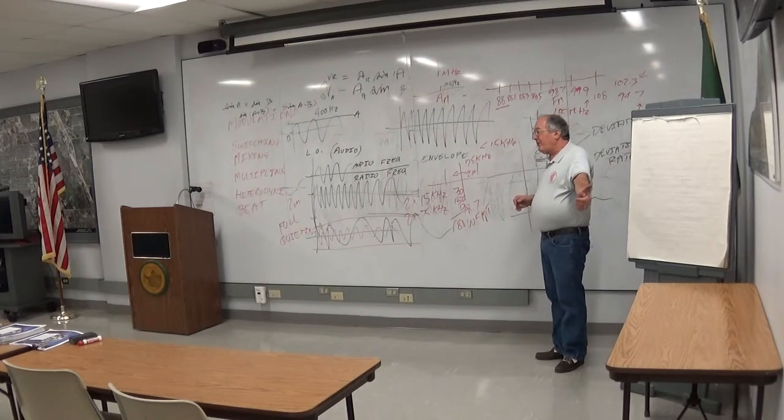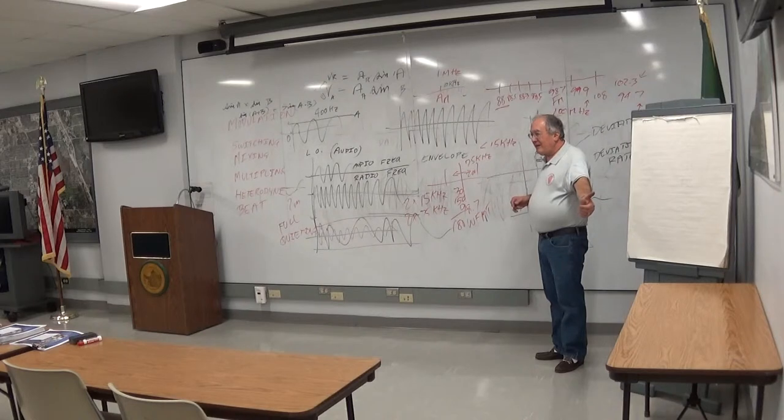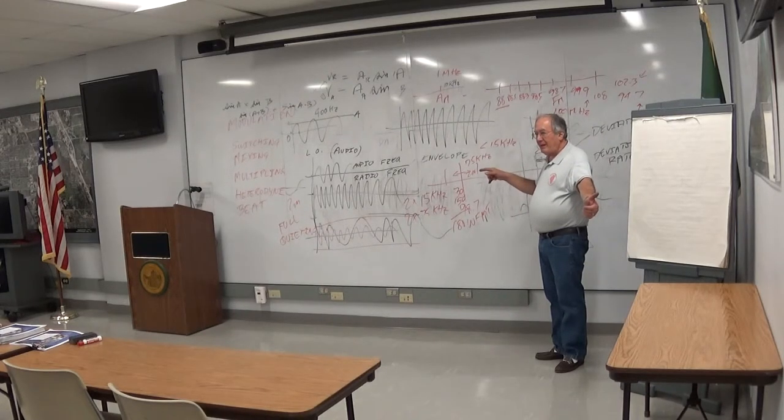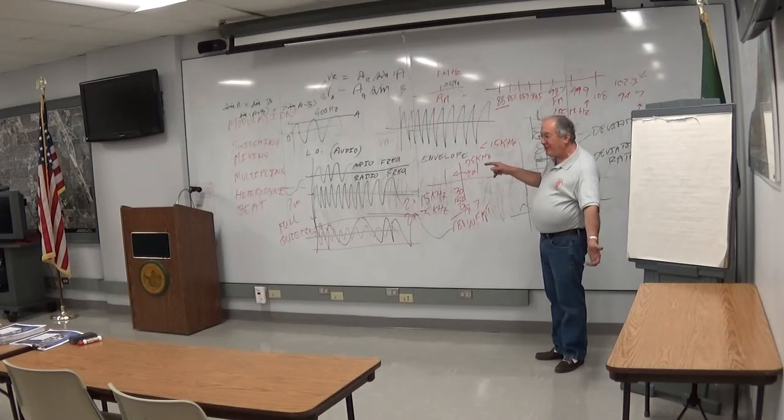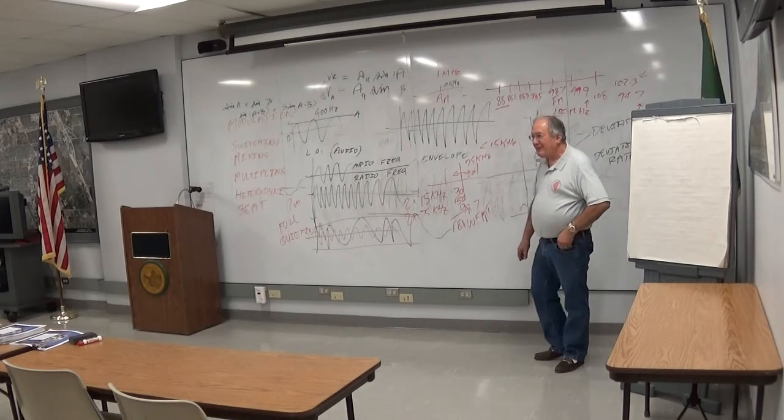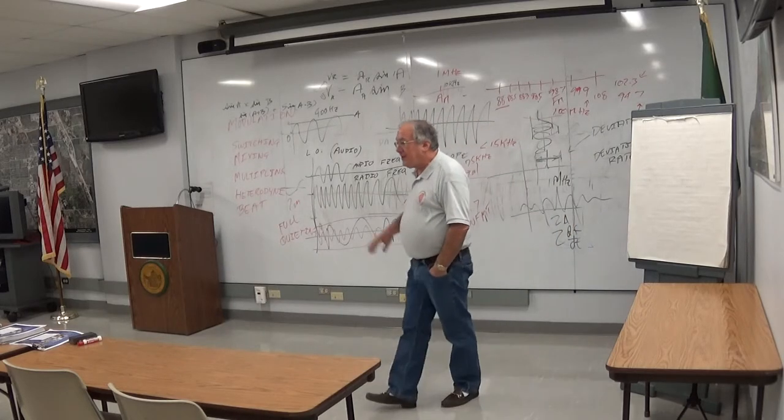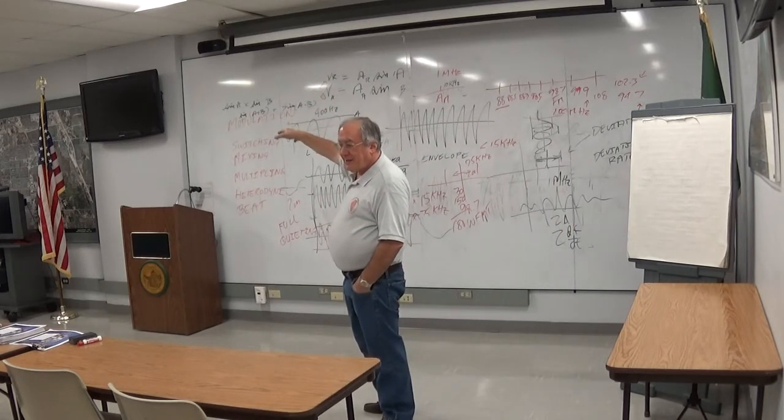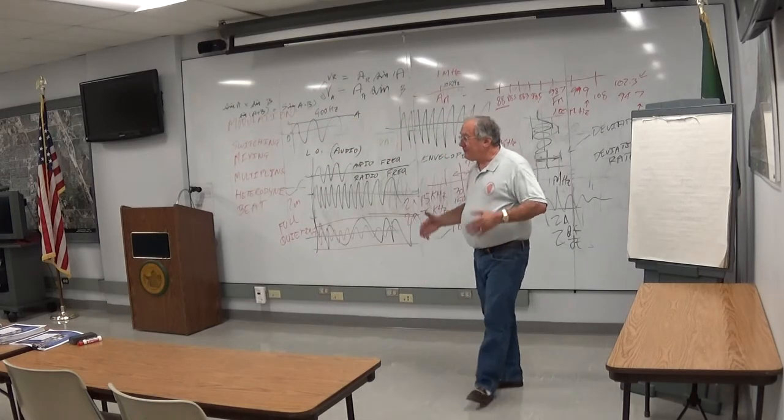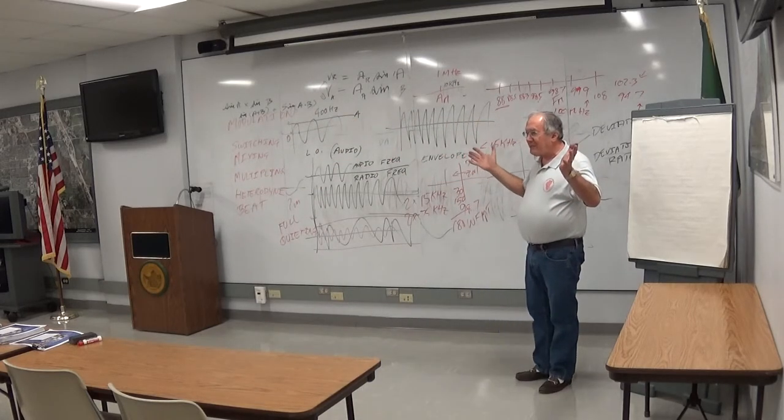When you were operating packet radio, if you ever did that back in the 70s, your baud rate was 1,200 on the 2 meter band. If you operated on HF, it was only 300, like the old telephone coupler modems were. You go up to 1.2 gigahertz, you can go to 9,600 and it keeps going up from there. Higher, more space available, higher data rates possible.